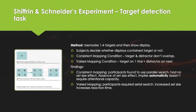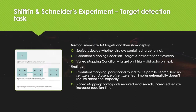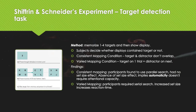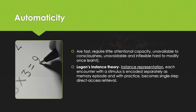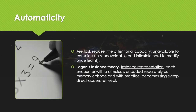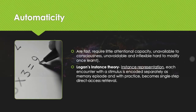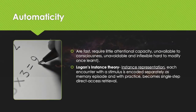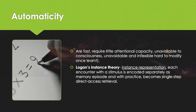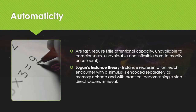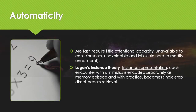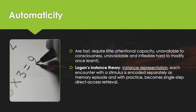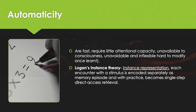Varied mapping, on the other hand, required serial search, and as a result brought about an increase in reaction time as the set sizes increased. Automaticity is defined as fast processes that require little attentional capacity and are unavailable to consciousness. It is unavoidable and inflexible, whereby it is hard to modify once learned. This is the effect of practice — tasks become automatized or automatic.